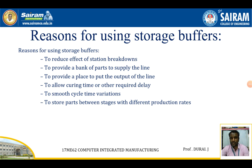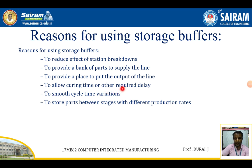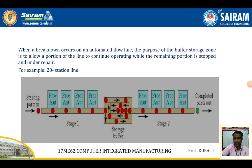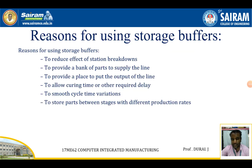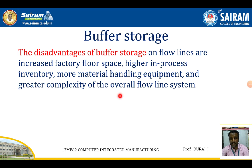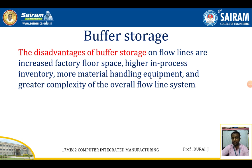Buffer storage is used to reduce the effect of station breakdowns — when one station breaks down, the other workstations continue working, and buffer storage helps by providing a bank of parts to supply the line. It also provides a place for the output of the line, allows curing time or other required delays, smooths cycle time variation, and stores parts between stages with different production rates. The disadvantages of buffer storage are increased factory floor space, higher process inventory, more material handling equipment, and greater complexity of the overall flow line system.